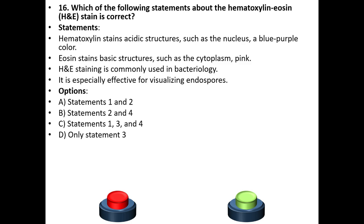Sixteenth question. Which of the following statements about the hematoxylin and eosin (H&E) stain is correct? Statements: Hematoxylin stains acidic structures such as the nucleus a blue-purple color. Eosin stains basic structures such as the cytoplasm pink. H&E staining is commonly used in bacteriology. It is especially effective for visualizing endospores.